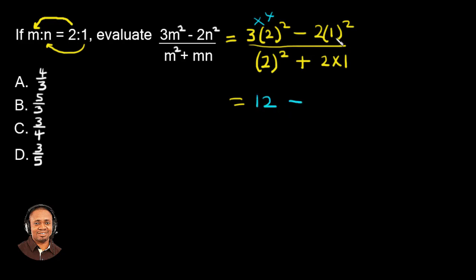1 squared is 1. 1 times 2, that gives us 2. So we have this written at the numerator.